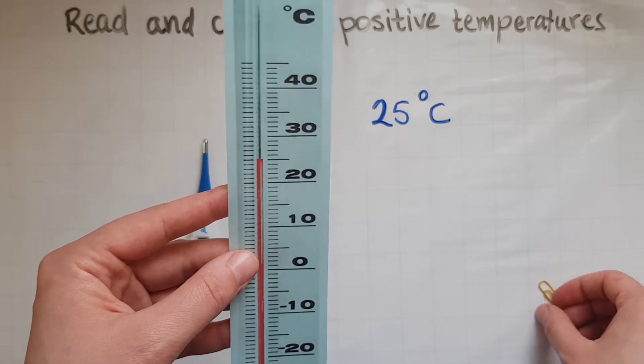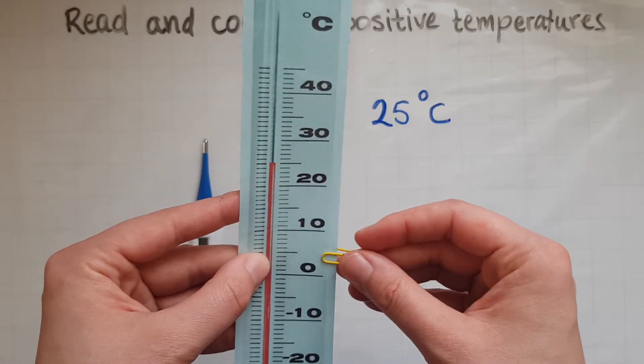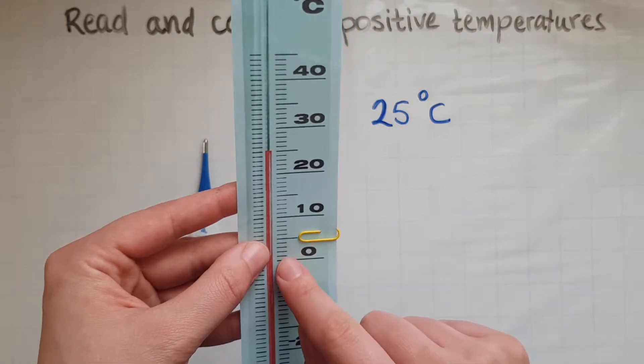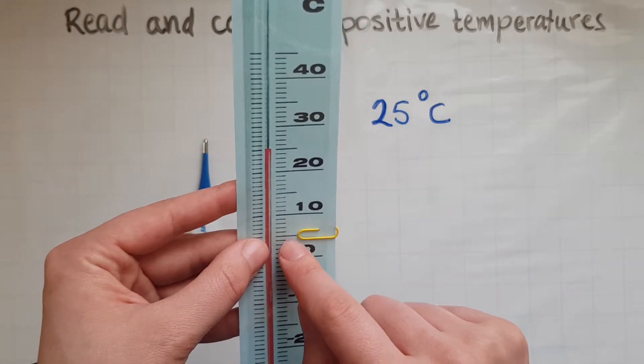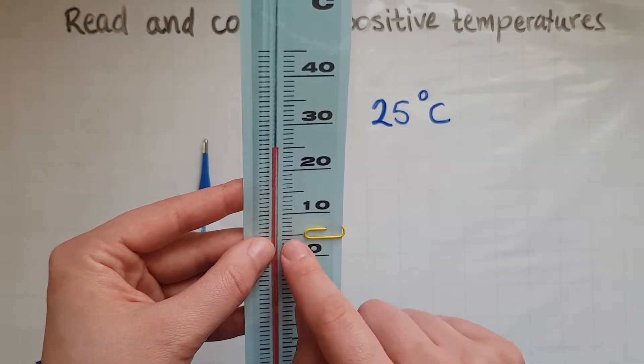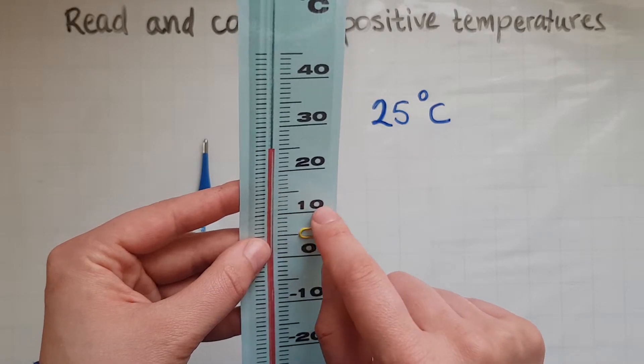So what temperature will this be? This is between 0 and 10. So this is 1, 2, 3, 4, 5. This is 5 degrees Celsius. This is 6, 7, 8, 9 and then 10.